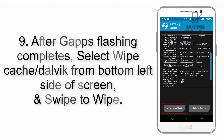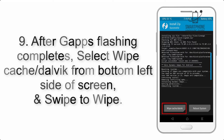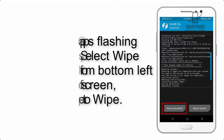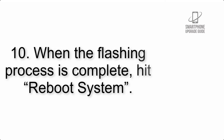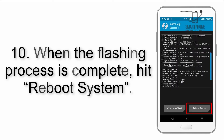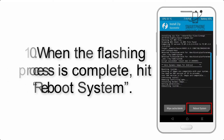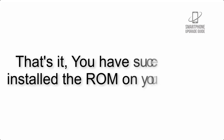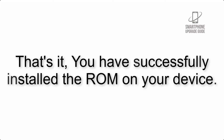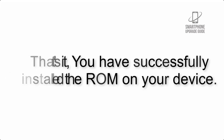Step 8: flash the GApps zip package in the same manner. Step 9: after GApps flashing completes, select Wipe Cache and Dalvik from the bottom left side of the screen and swipe to wipe. Step 10: when the flashing process is complete, hit Reboot System. That's it — you have successfully installed the ROM on your device.